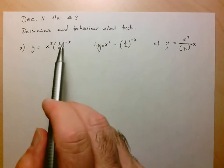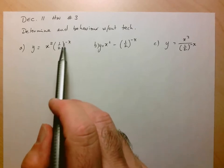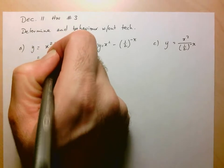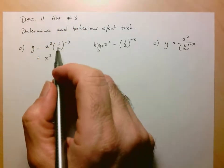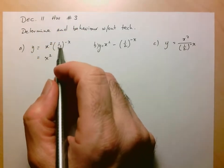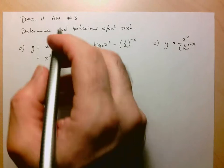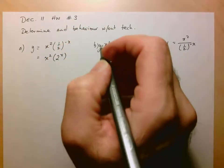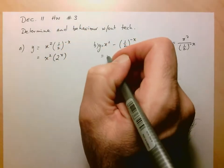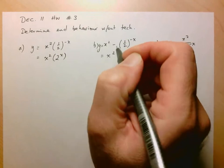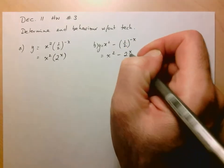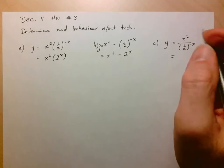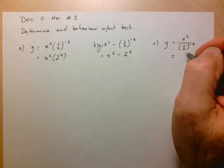First thing I notice is that one-half to the negative x can be written in a simpler way. Instead of writing one-half to the negative x, because one-half to the negative one is 2, I can just rewrite that as 2 to the x. I'm going to do that in each of these because it's easier to analyze.